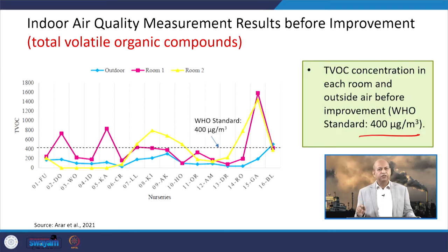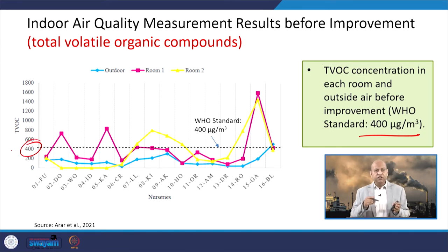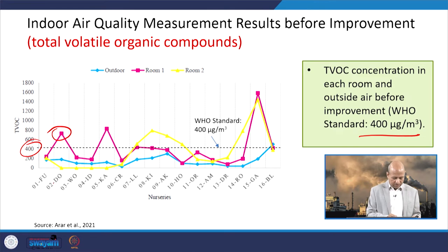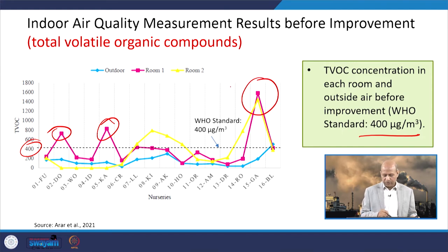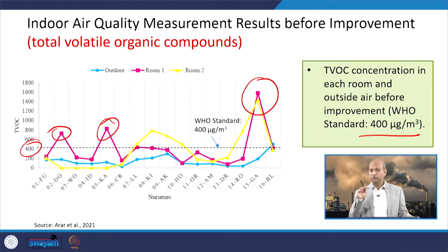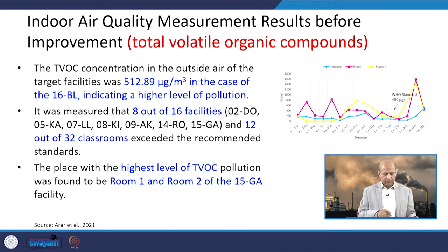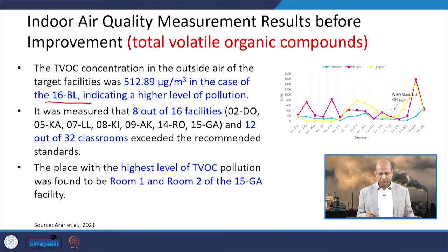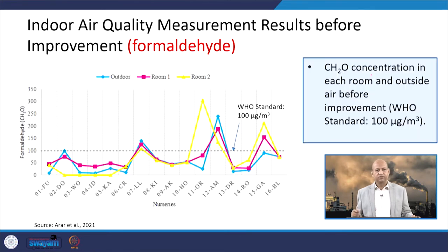For total volatile organic compounds (TVOC), the WHO prescribed standard is 400 micrograms per cubic meter. TVOC is exceeding this limit at several nursery facilities. Facilities 02DO and 05KA show very high TVOC concentrations in both room 1 and room 2, while outdoor air concentrations remain below the prescribed limit. Facility 16BL also indicates higher TVOC concentrations in both rooms.